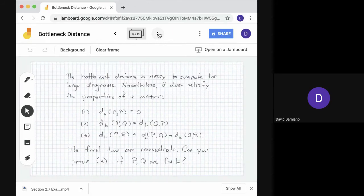So the bottleneck distance is messy to compute. You can imagine for a large set of points to search through all possible partial matches is a long process. However, abstractly, it has the properties of the metric. We can see that if we take d_P P, we get 0. If we have P and Q, we take d_B of PQ. It's the same thing as d_B of QP. And the third one is the triangle inequality. d_B PR less than or equal to d_B PQ plus d_B QR. The first two are immediate. I'll leave the third one for you to prove if P and Q are finite.